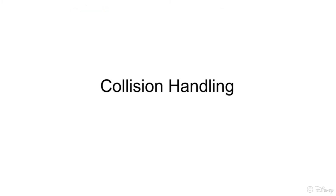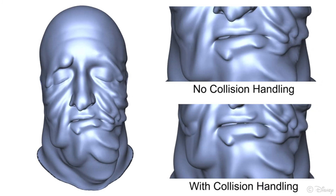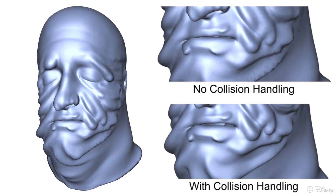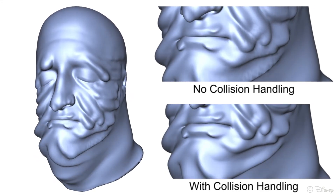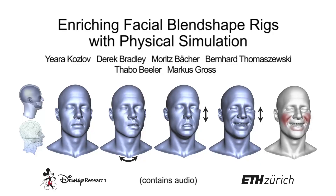We use this example to demonstrate a benefit of adding physical effects to facial animation, and that is collision handling, where our method can prevent self collisions of the lips, resulting in a more realistic animation. In summary, we present the first method to add physical effects to traditional blend shape animations, which takes into account the spatiotemporally varying material properties that occur during facial expressions.